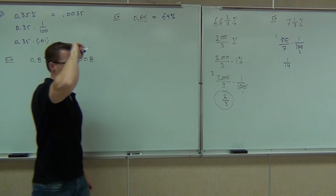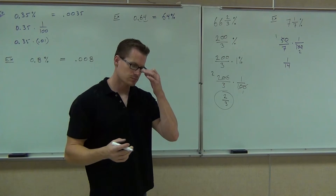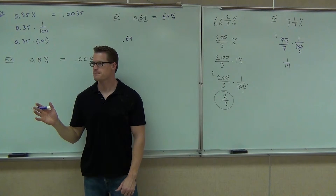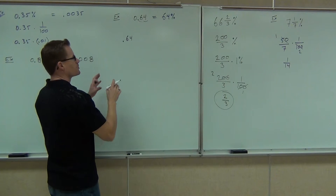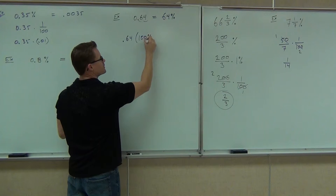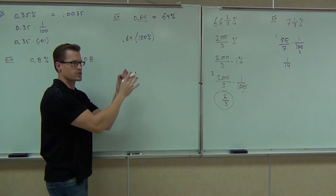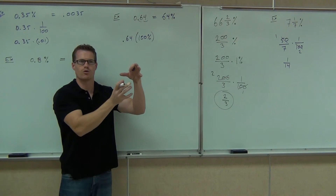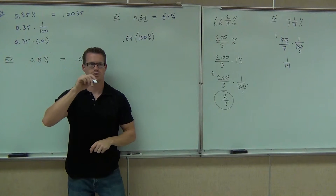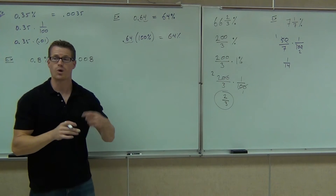Why do we do that? Well, if you think about it, we want to create a percent. What we do instead of multiplying by 1 over 100 to change from a percent to a decimal — we multiply by 100% to create that percent. Otherwise, if we did 1 over 100 again, we'd be dividing by that percent, and there's no percent to divide by. So if we multiply by 100%, when you multiply by 100, you move that decimal two spots to the right, and you still have that percent. That's how we're getting 64%.